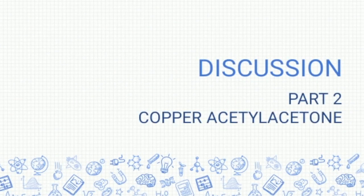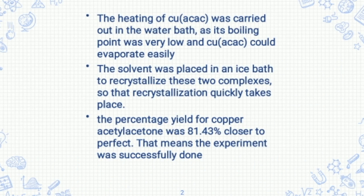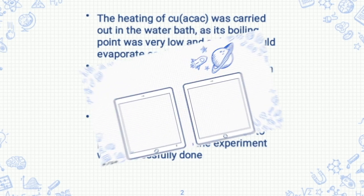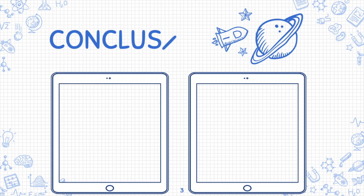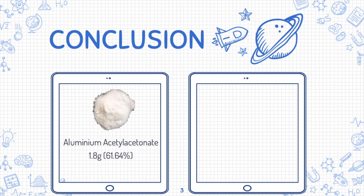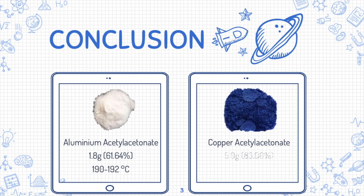For the discussion of Part 2, copper acetylacetonate: the heating was carried out in a water bath because the boiling point was very low and the solvent evaporated easily. The solution was placed in an ice bath to recrystallize the complex so that recrystallization quickly took place. The percentage yield for copper acetylacetonate was 81.43%, which is close to ideal. In conclusion, two products were obtained: aluminium acetylacetonate, a white solid with a mass of 1.8 g, and copper acetylacetonate, a blue solid with a mass of 5.0 g.